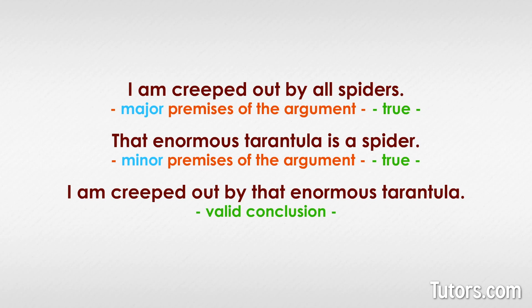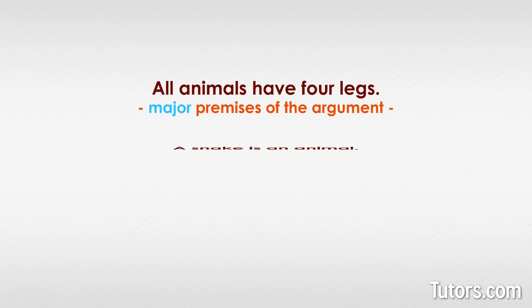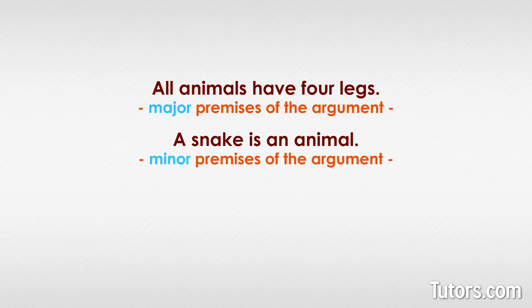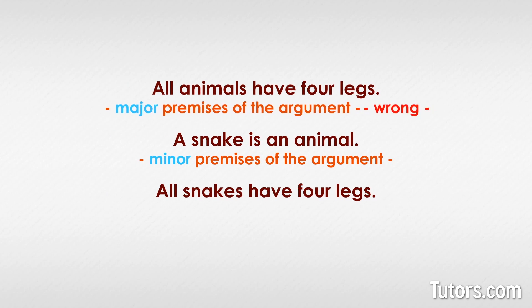It is important to know that a syllogism can present faulty premises — the conclusion to any faulty premise is automatically invalid. Like this example: all animals have four legs; a snake is an animal; therefore all snakes have four legs. The conclusion makes no sense because the major premise is wrong. Anything built from the incorrect major premise that all animals have four legs is then invalid.